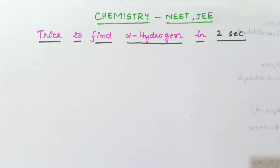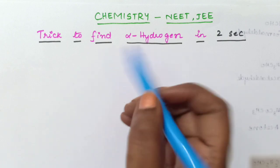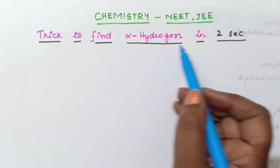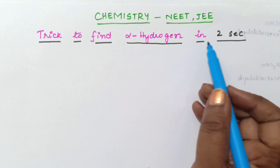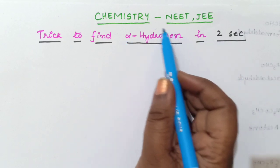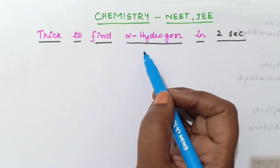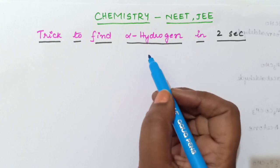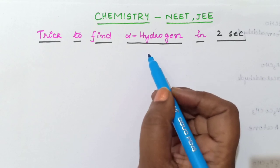Hello students, welcome to Ishwari Taniksha channel. In this video we are going to find out a trick to find alpha hydrogen atoms in 2 seconds. So why is it important to learn about alpha hydrogen atoms? Because next we are going to learn about aldol condensation.